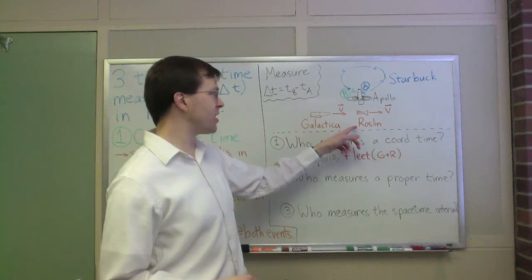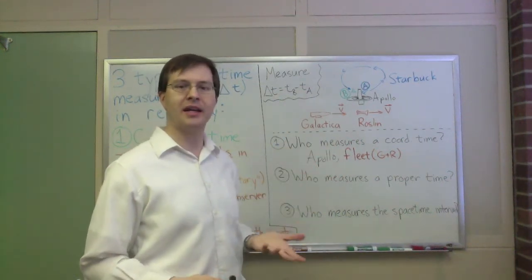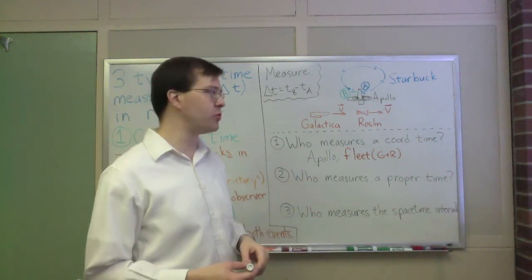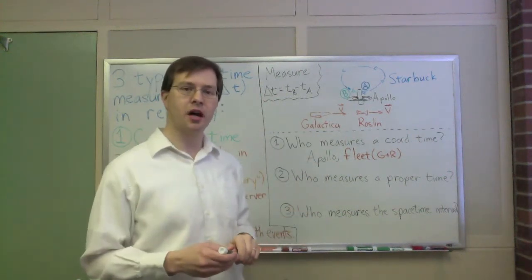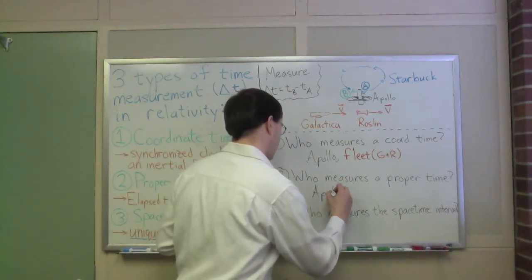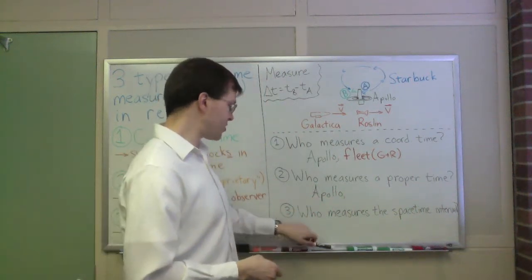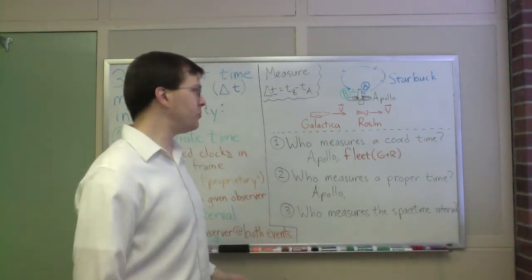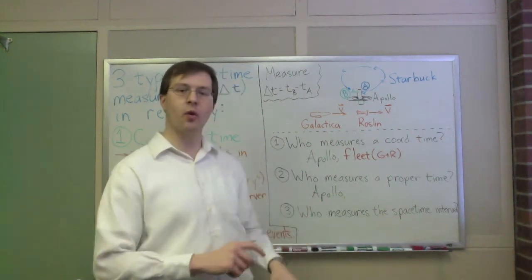Well, President Roslin's only there for event A, the Galactica's only there for event B, so neither one of them can be an observer measuring proper time between those two events. On the other hand, Apollo's there for both events. Apollo can measure proper time, so Apollo is definitely one of them, measures proper time between the two, because, again, he's present for event A, he's present for event B, and he can just keep track of his watch the whole time.